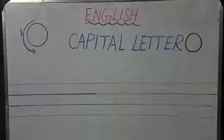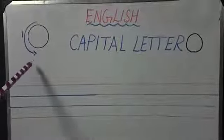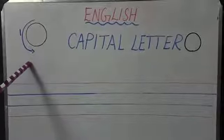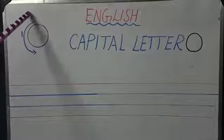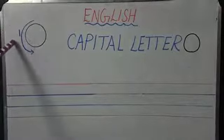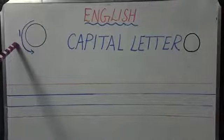Let's see the formation first. Here we have capital letter O formation. We have only one formation, children. How many formations? Only one.